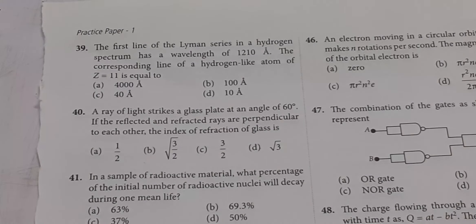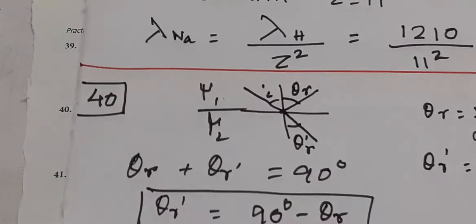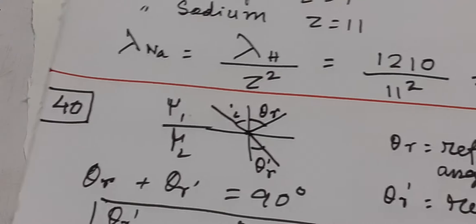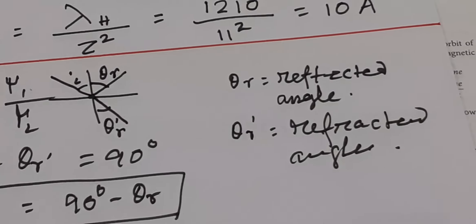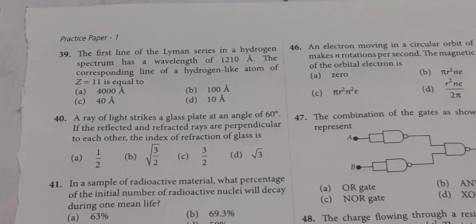Job 39. The first line of the Lyman series in hydrogen spectrum has wavelength 1210 Å. The corresponding line of a hydrogen-like atom with Z = 11: wavelength scales as λ = λH/Z². So λ = 1210/121 = 10 Å. Answer D.